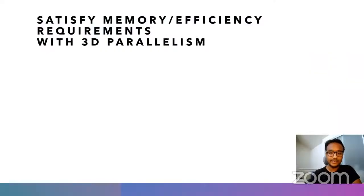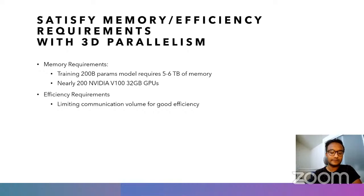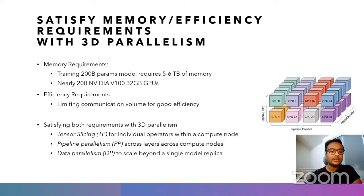Let's take a quick step back and talk about some of the system requirements for training a really large model. From a memory perspective, training a 200 billion parameter model requires 5 to 6 terabytes of memory — that's nearly 200 NVIDIA V100 GPUs, each with 32 gigabytes of memory. From an efficiency requirement, in order to train on a large number of GPUs, we must limit the communication across GPUs to prevent communication from being a bottleneck.